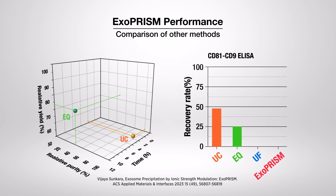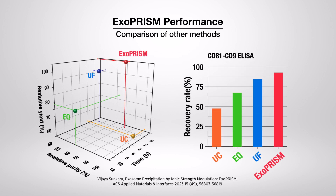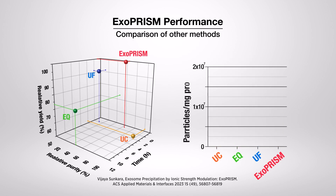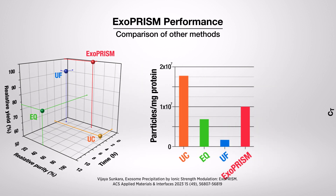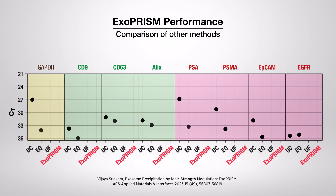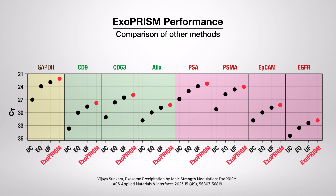Exoprism has the highest recovery rate of extracellular vesicles among four isolation methods in ELISA using tetraspanin markers, and the purity of extracellular vesicles is the second highest after the ultracentrifugation method. This graph illustrates the relative amounts of mRNAs from identical samples using four EV isolation methods. Among all biomarkers, including exosomal and prostate cancer-specific biomarkers, Exoprism exhibits the highest mRNA concentrations.